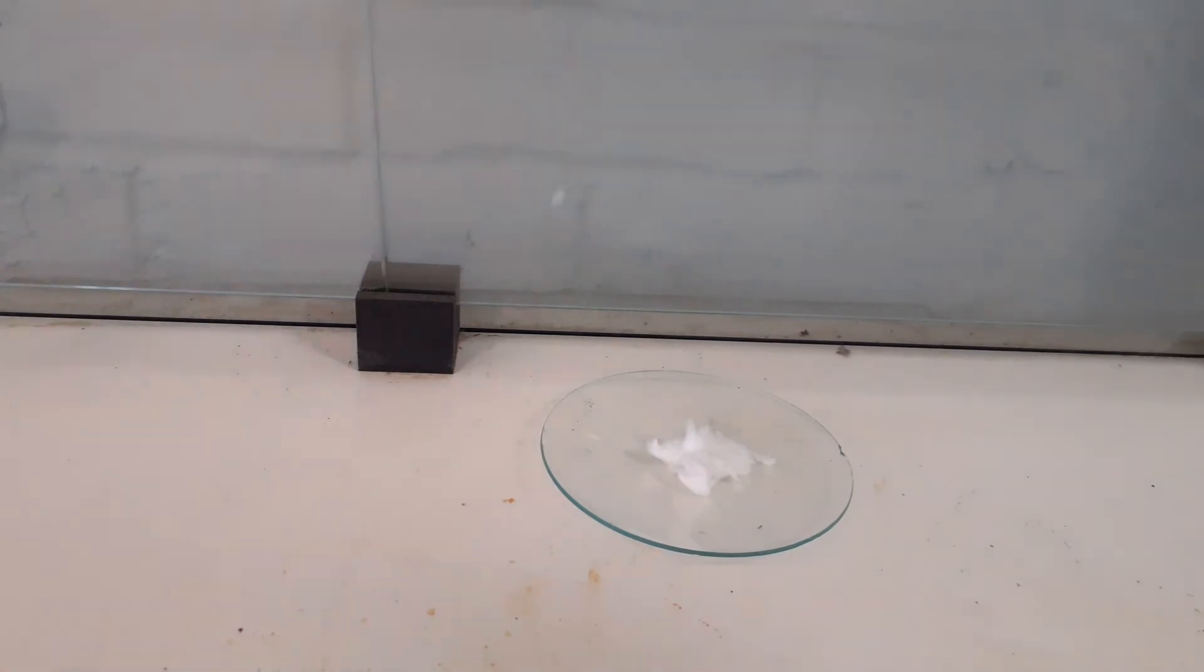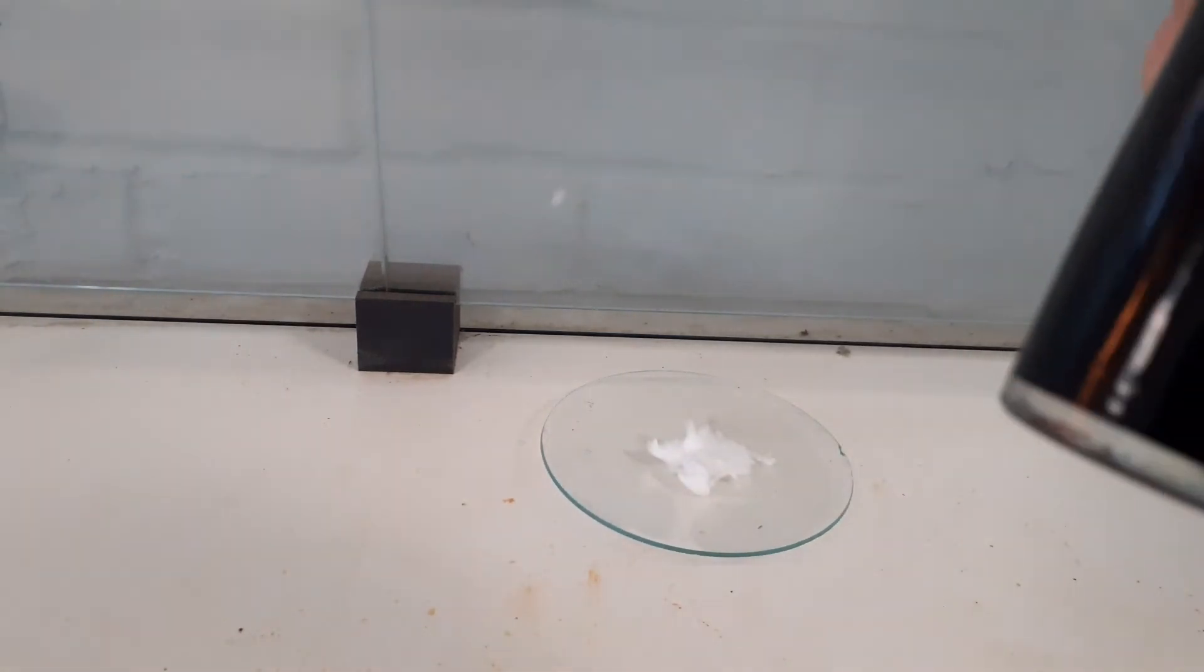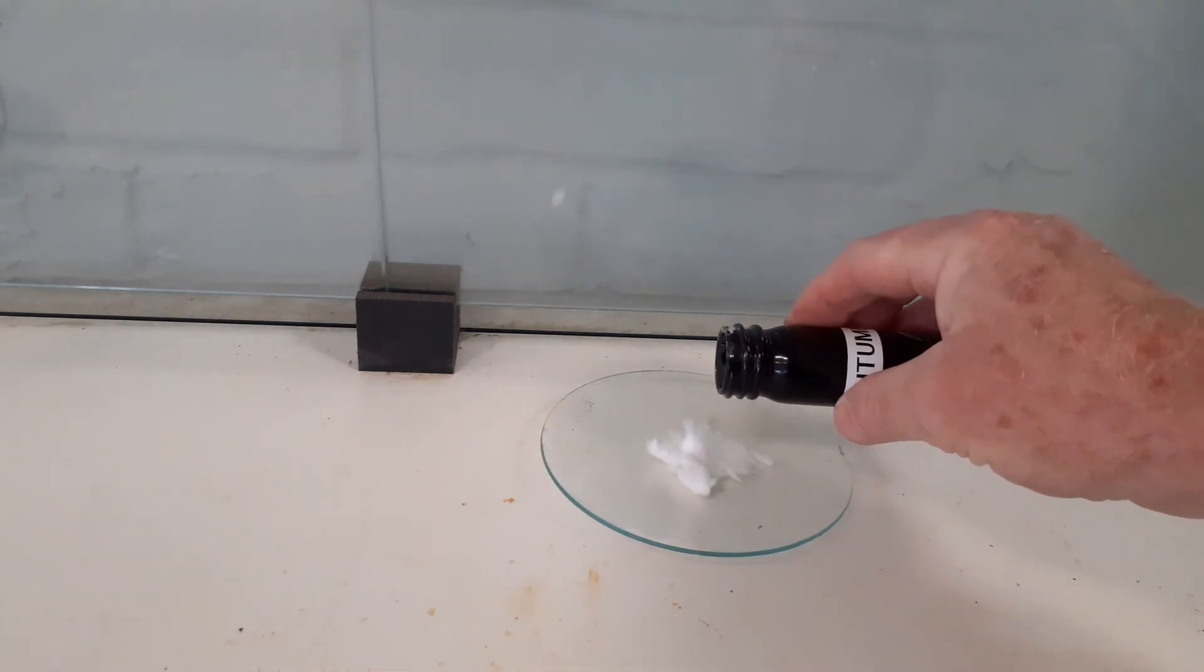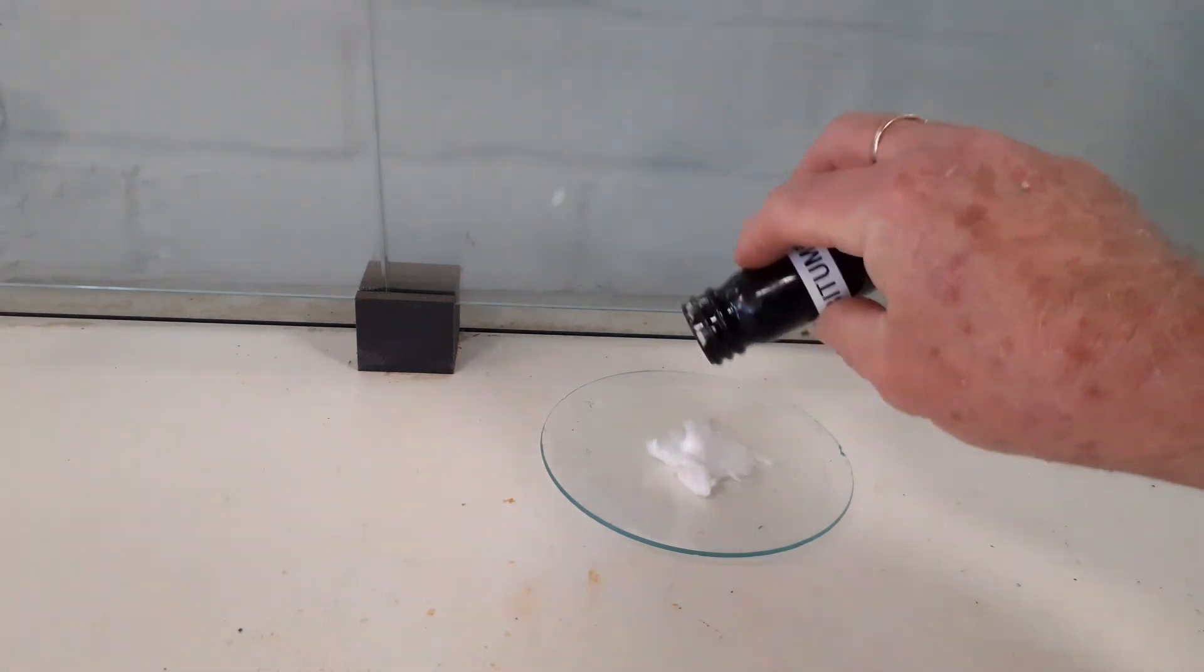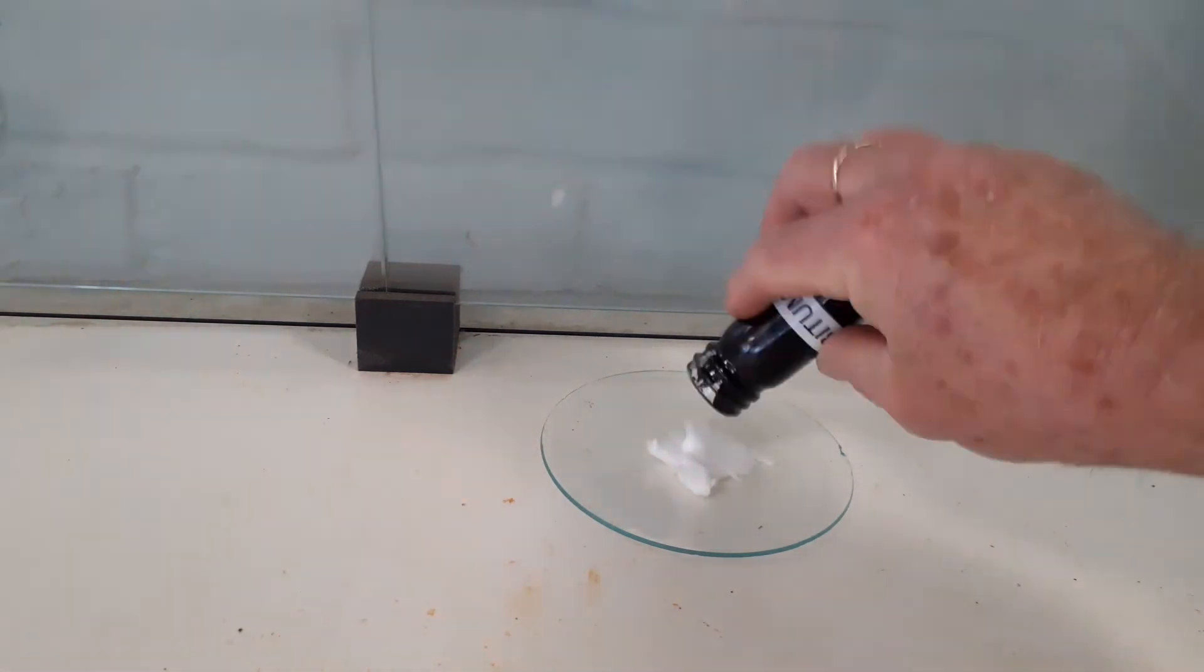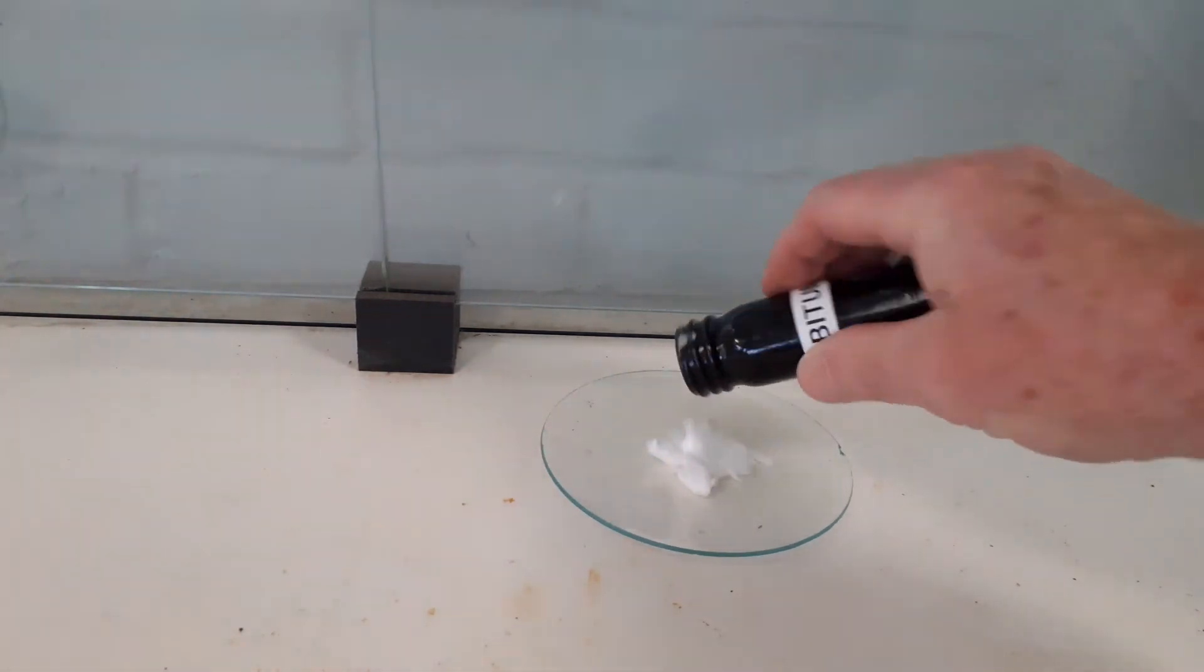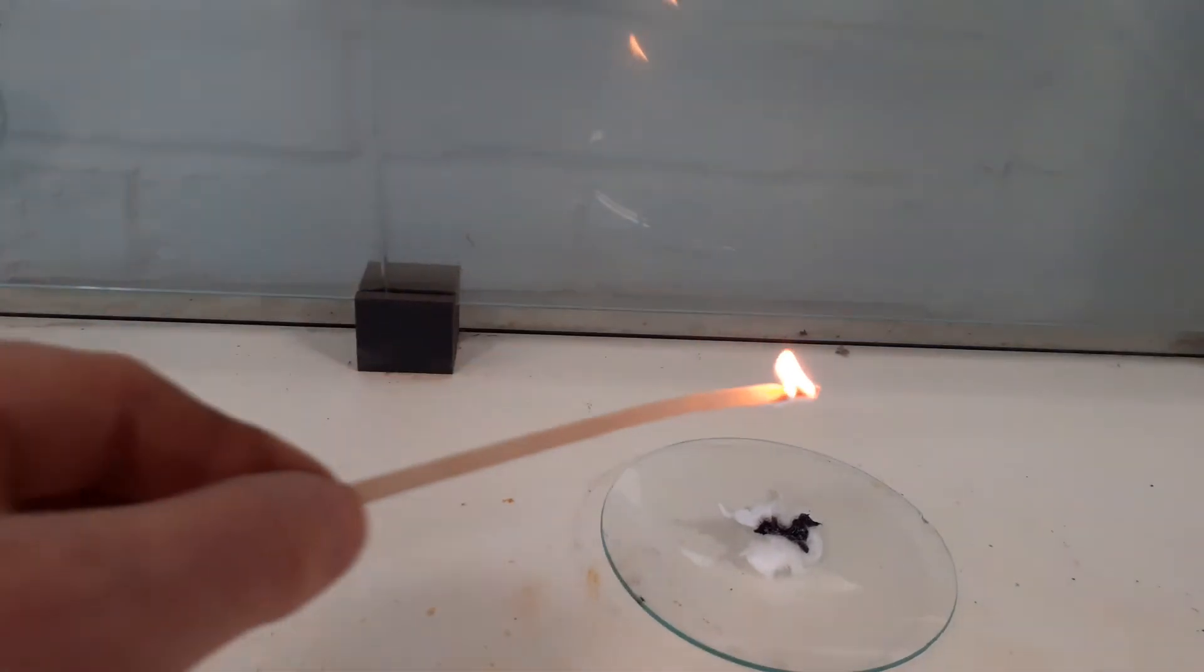But lastly we've got bitumen, this thick dark black liquid. I'm going to pour it so you can see how thick it is. It's so thick that we may be here forever trying to get it out. In the end I had to cheat and spoon it out otherwise we'd be here forever. Now let's try and lighting it.